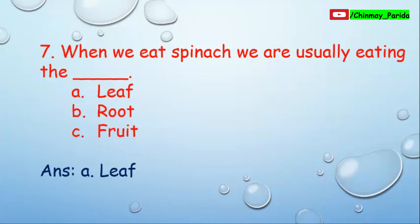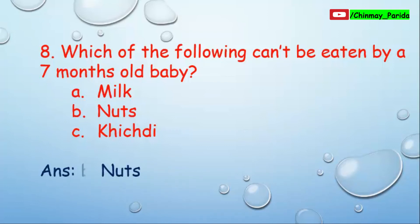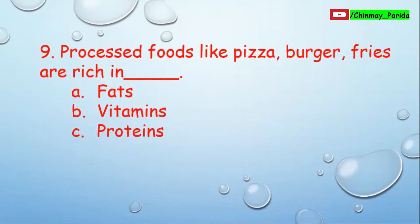Question number eight: Which of the following can be eaten by a seven-month-old baby? Option A: milk, option B: nuts, option C: khichdi. A seven-month-old baby can easily eat milk and khichdi because khichdi is well cooked, but the baby cannot eat nuts as their teeth are not strong enough to chew them. So the correct answer is option B, nuts — nuts cannot be eaten.